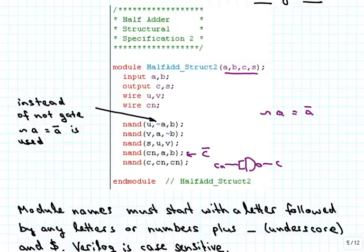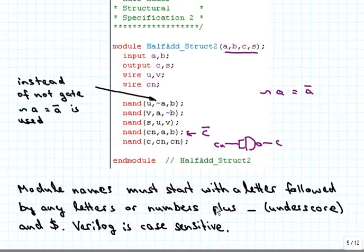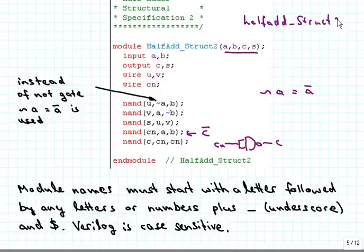We mentioned already that module names have to start with a letter followed by any letters or numbers plus the underscore or the dollar sign. One thing we have not mentioned yet is that Verilog is case sensitive. If I would have written here instead of the capital HalfAdd, if I would have just written halfadd like this underscore struct2, then that would refer to a different module. Verilog would complain if I just mistakenly use the lowercase here and then in some other place use the uppercase.